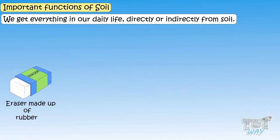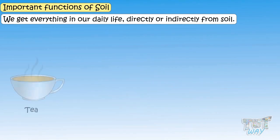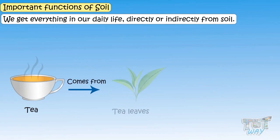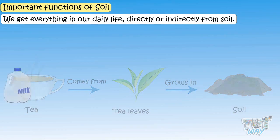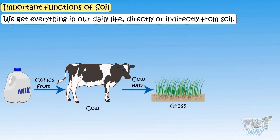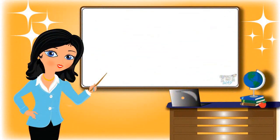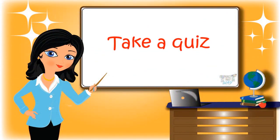Erasers come from rubber, and rubber comes from a tree that grows in soil. The tea we drink comes from tea leaves — a plant that grows in soil. The milk we drink comes from a cow, and the cow eats grass, which is also a plant supported by soil. So there is no end to the uses of soil. Today we learned a lot about soil — now go ahead and take a quiz to learn more. Bye bye!